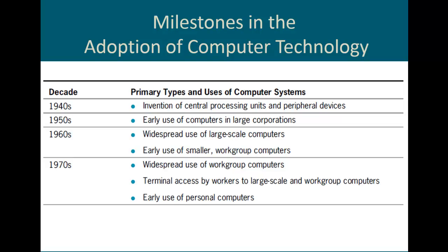Moving into the 70s and 80s, we see the development of end user computing spurred by many industry teams, allowing the widespread use of workgroup computers. Terminals could be placed at workers' desks and connected directly to a large network computer system. The development of smaller, less expensive computer systems allowed the cost of ownership to spread beyond just governments to other large agencies, helping automate processes that were previously done manually. But we really didn't see huge growth until we moved into the 90s.